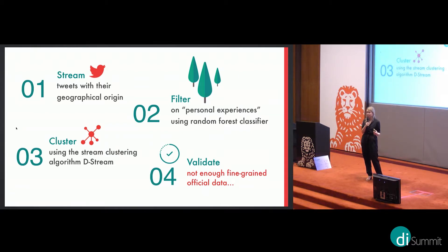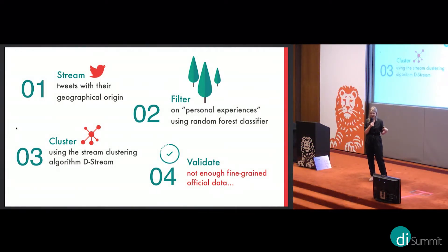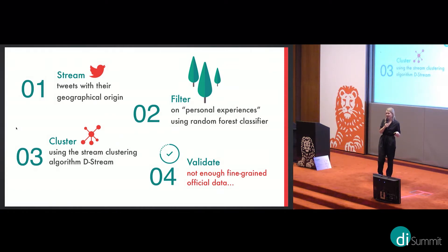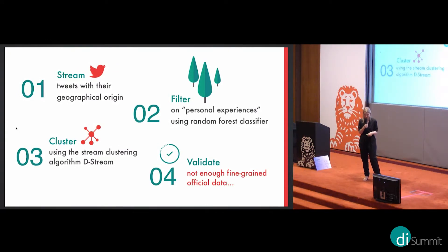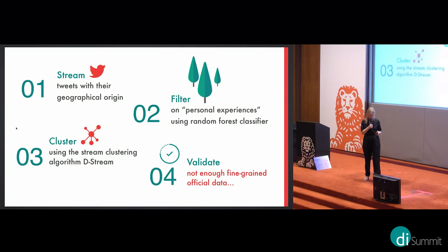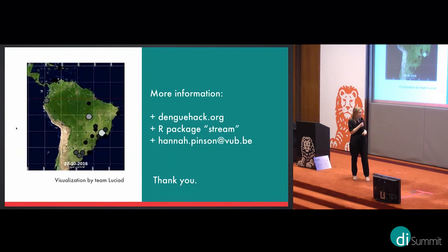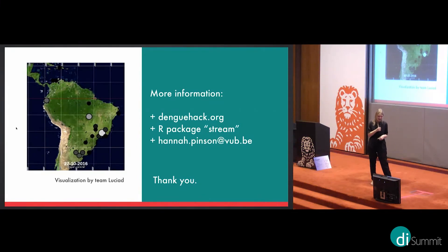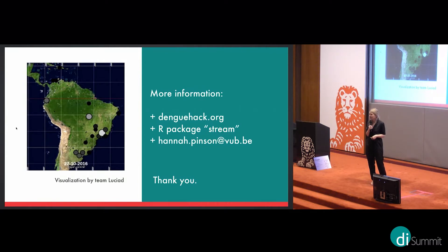You can see the evolution of clusters over time — the evolution of outbreaks — and it isn't bound to any region or country; you can apply it to any city. Every good machine learning process requires validation, but the problem was that there was not enough fine-grained official data to work with, and we only had 36 hours. In the end, with the help of visualization, we found that the clusters we identified roughly correspond to places in South America where dengue is known to break out.